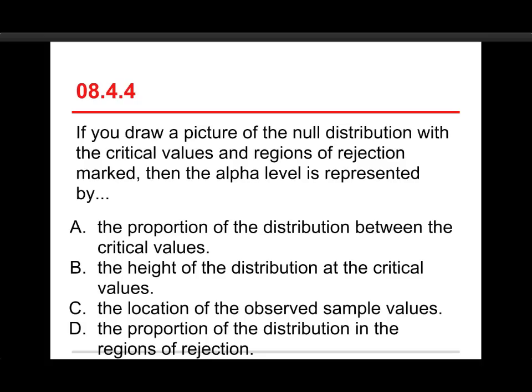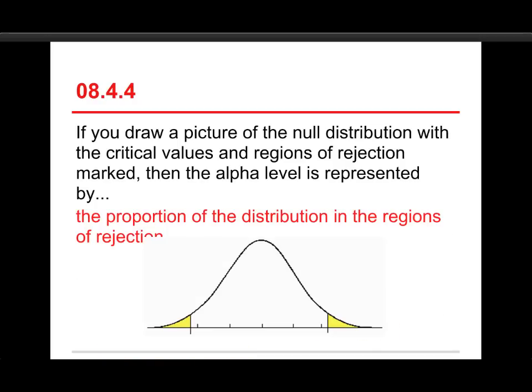Alright, number four. If you draw a picture of the null distribution with the critical values and regions of rejection marked, then the alpha level is represented by what? A, the proportion of the distribution between the critical values; or B, the height of the distribution at the critical values; or C, the location of the observed sample values; or D, the proportion of the distribution in the regions of rejection. Well, the answer is the one running over the line here. It's the proportion of the distribution in the regions of rejection.